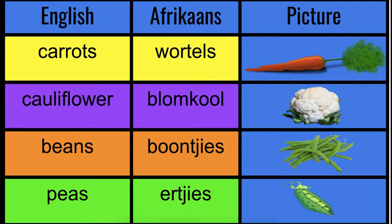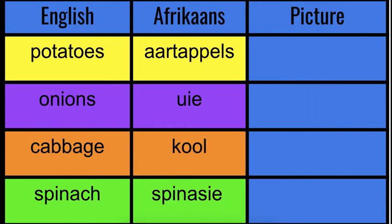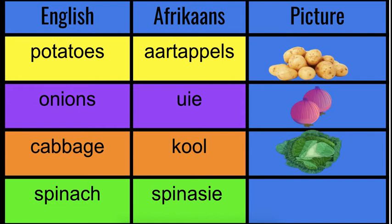This is pragtig — baie, baie mooi! Next one: aartappels, eier, kool, spinasie. Let's say it together: aartappels, eier, kool, spinasie. Now your turn to say it by yourself. That's fantastic!